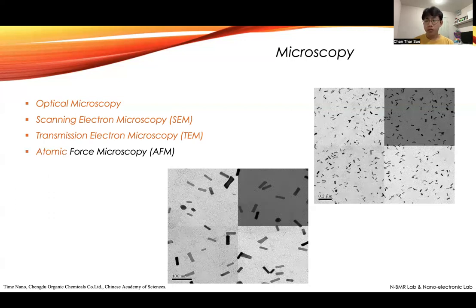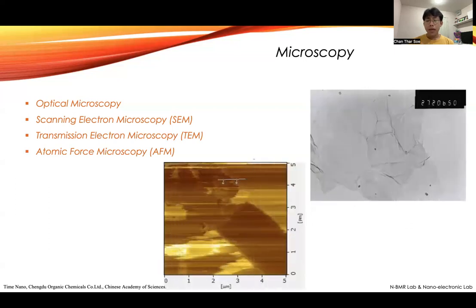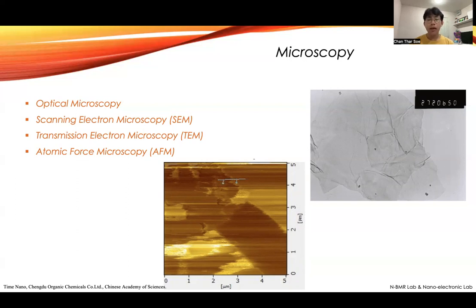The last microscopy technique is the Atomic Force Microscope (AFM). In the AFM, a tip scans the whole surface, reading it — which takes a long time. This is the image of vertical graphene nanosheets: the top image, and the second image below is the line scan by the AFM. By AFM, we can see the thickness of the graphene nanosheet film, and also the surface roughness. This kind of information can be provided by microscopy techniques.